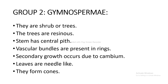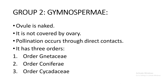Group 2 includes Gymnosperms: they are shrubs and trees; trees are resinous; stem has central pith; vascular bundles are present in rings; secondary growth occurs due to cambium; leaves are needle-like and form cones; ovule is naked and not covered by ovary; pollination occurs through direct contact. It has three orders: the first is Gnetaceae, second is Coniferae, and the third is Cycadaceae.